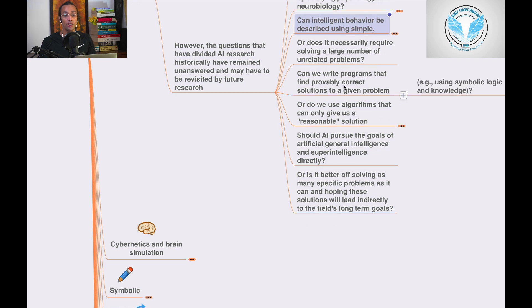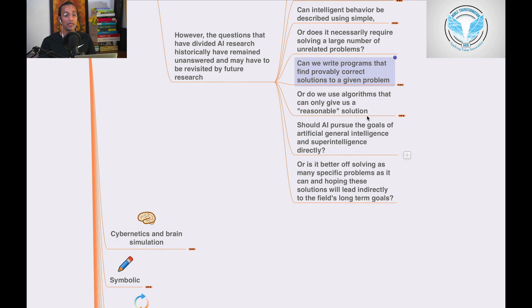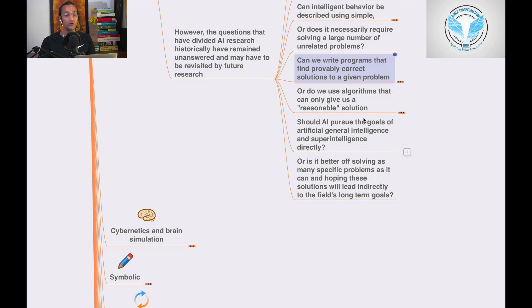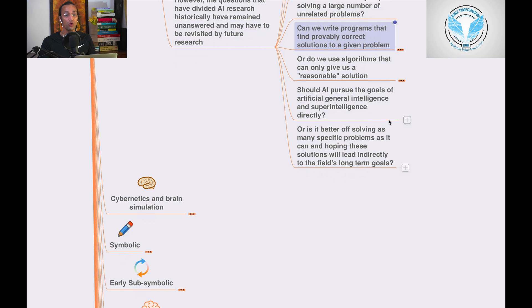Or do we use algorithms that can give us reasonable solutions? Should AI pursue the goals of artificial general intelligence and super intelligence directly?